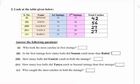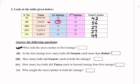Rahul: 22 plus 27 equals 49. Now we will answer the questions. Question number 1: who took the most catches in the first inning? In the first inning the most catches are 30, so Aman took the most catches in the first inning. We will write Aman.